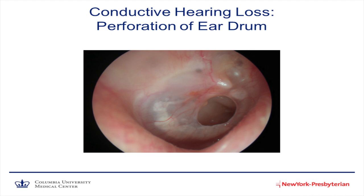Another cause of conductive hearing loss is if there is a hole in the eardrum. This can happen from a bad q-tip accident or a bad ear infection where a hole develops. And think about it as a trampoline — if there's a hole in the trampoline, it's not going to work, you can't jump on it. In the same way, if sound waves try to go on an eardrum with a hole in the middle of it, those waves don't have anything to vibrate against.